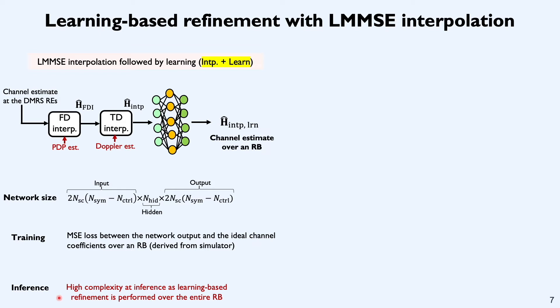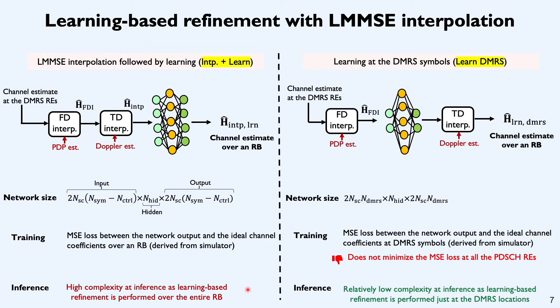Now, one important comment about this approach is that the complexity of this technique is large. And why do we care about this complexity? It's because this technique of refinement must be applied at each and every RB and each and every slot. Imagine a 15 kHz system spanning about 20 MHz of bandwidth. There are about 100 RBs and we got to apply neural network based refinement 100 times in every 1 millisecond which is the slot duration. Therefore, it's very important to reduce the complexity of this neural network based refinement.